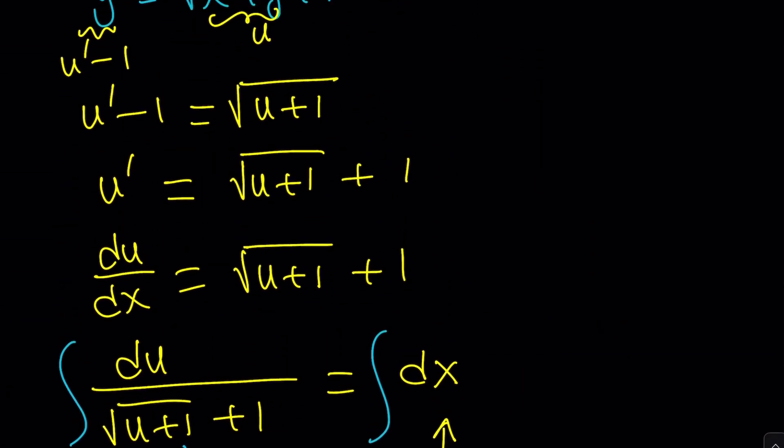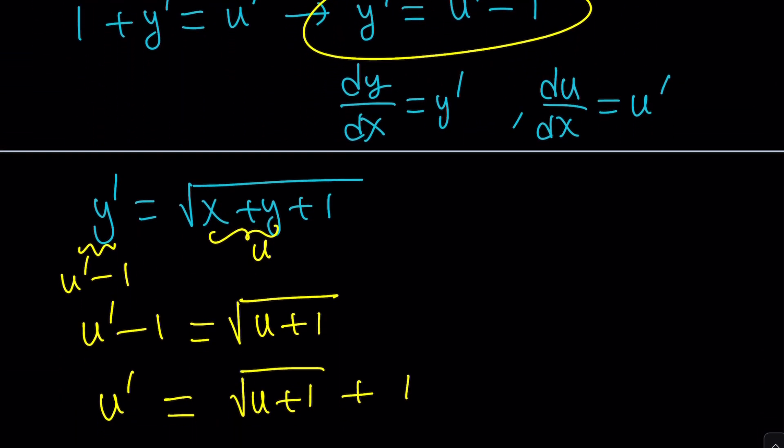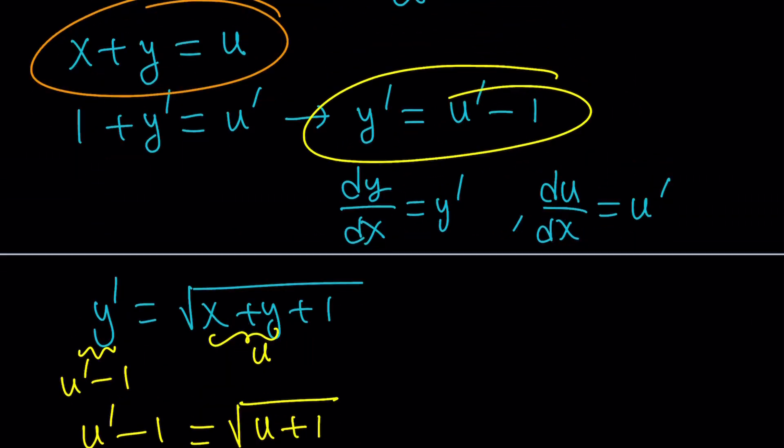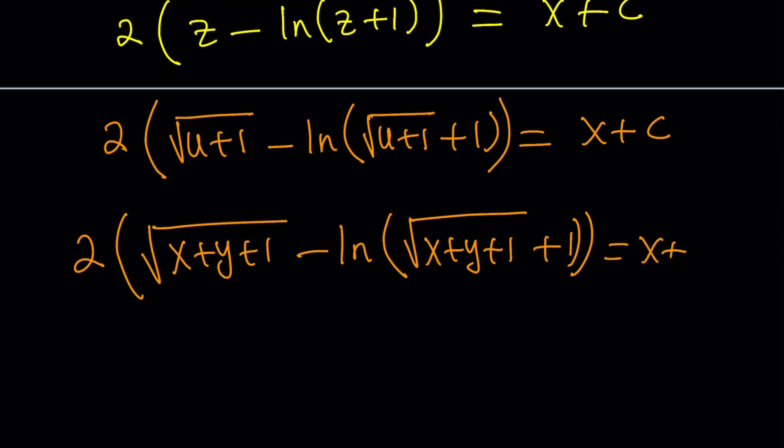Now, we've got to remember what we called u. u is, u are, no, u is what? x plus y. Okay, great. u equals x plus y. Where did I write that? Okay, here we go. u is equal to x plus y. So, let's go ahead and back substitute. This becomes 2 times the square root of x plus y plus 1 minus ln square root of x plus y plus 1 plus 1. There is the parentheses for ln and there is the parentheses for ln and then there is another parenthesis for the whole thing. And that equals x plus c. Awesome.